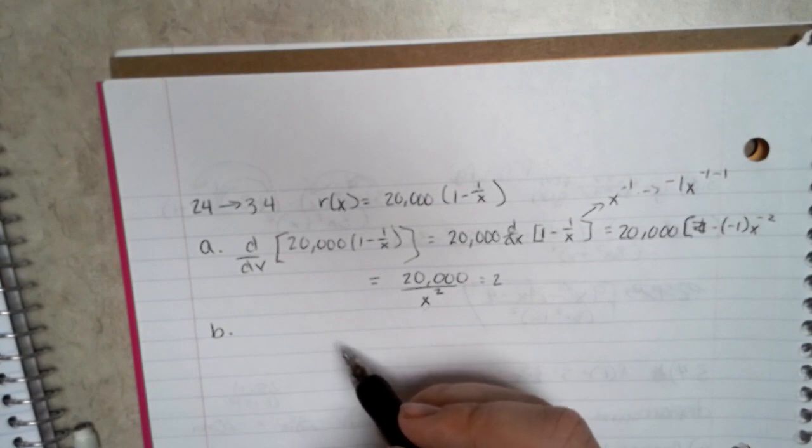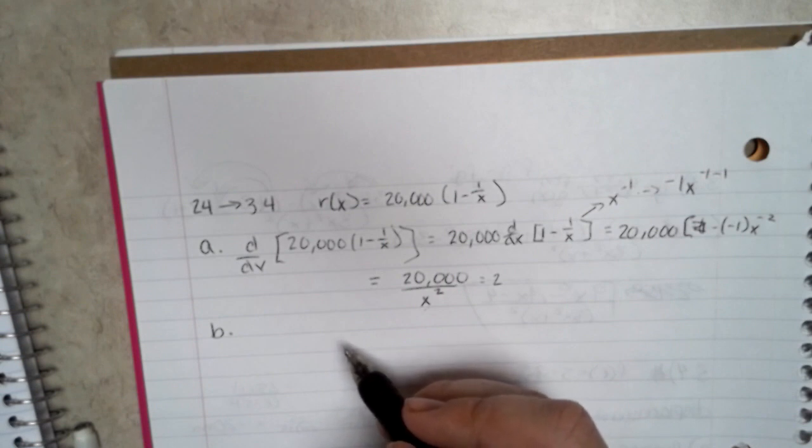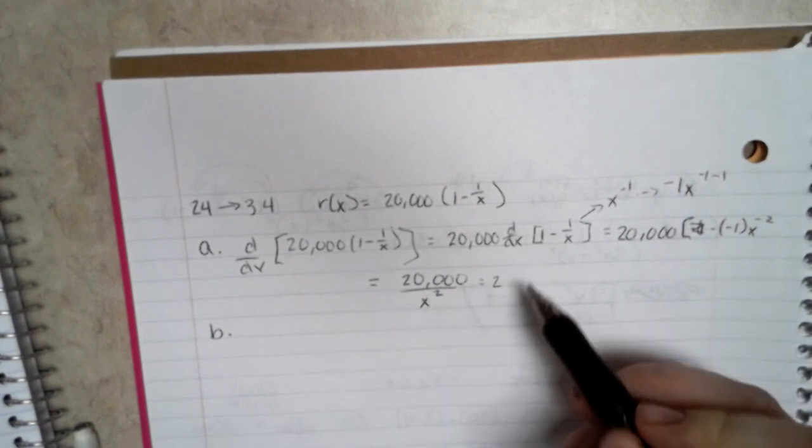So the approximate increase in revenue is 2, just like your answer for part A.